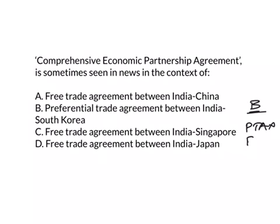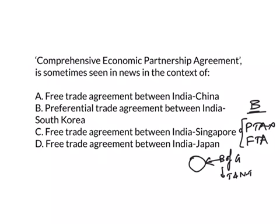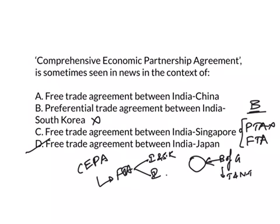There is a difference between preferential trade agreement and free trade agreement, which we already discussed. In a preferential trade agreement, the agreement will be on a selected basket of goods, and on this basket of goods they will reduce the tariffs and non-tariff barriers. So the answer is not B — it is D. Comprehensive Economic Partnership Agreement is a free trade agreement between India and South Korea and also between India and Japan.